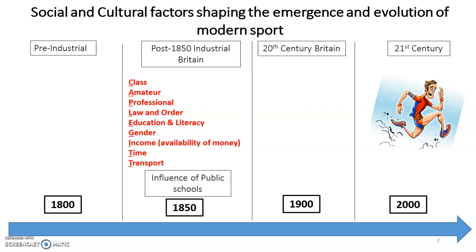Education and literacy were also key factors. Due to the public schools, boys were being educated and were literate, which means they could write rules. These written rules led to national governing bodies — for example, the Football Association in 1863. In this era, without the public schools, none of this would really have been possible. The influence of public schools is huge when it comes to post-1850 industrial Britain.